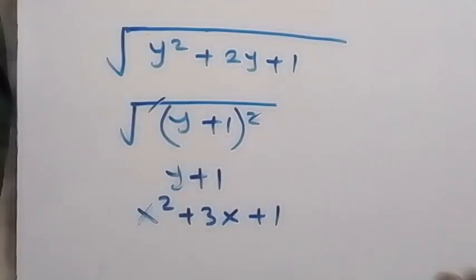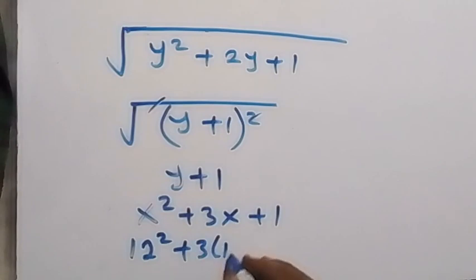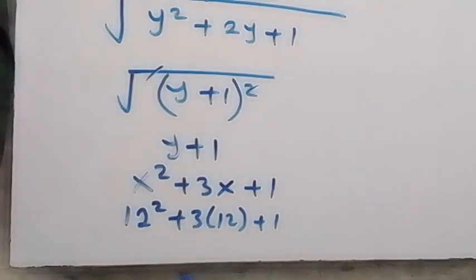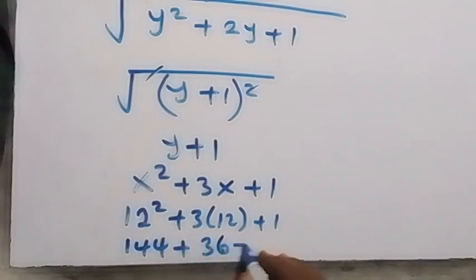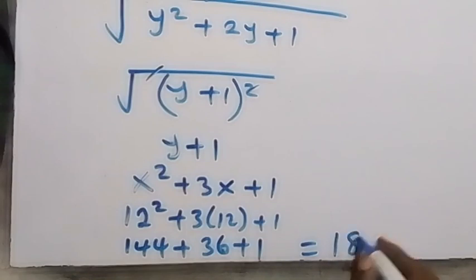So we have 12 squared plus 3 times 12, then plus 1. When we simplify this, 12 squared is 12 times 12, which gives us 144, then plus 3 times 12 which is 36, then plus 1. When we add this together this gives us 181.